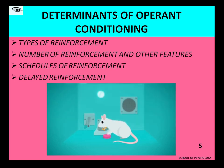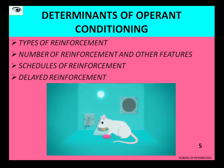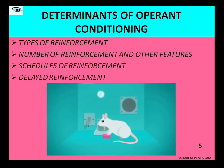Negative reinforcers involve unpleasant or painful stimuli. Whatever response the organism makes will help it to get rid of the painful stimuli — to avoid it or escape from it. So negative reinforcement leads to a kind of learning that helps the organism make escape and avoidance responses.